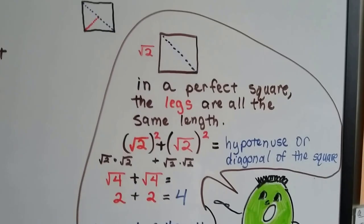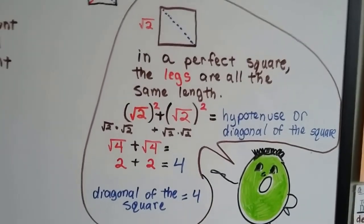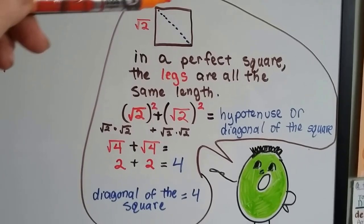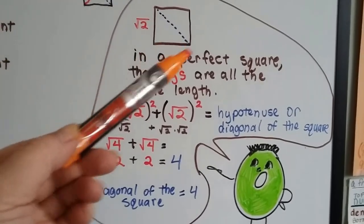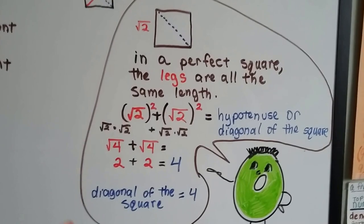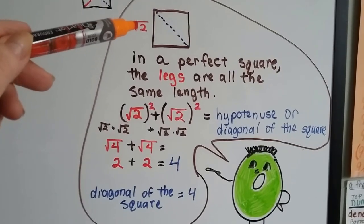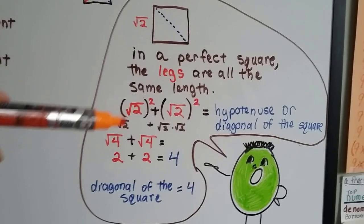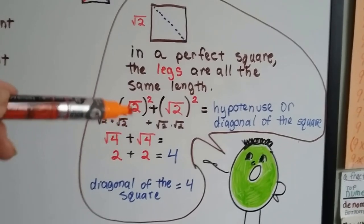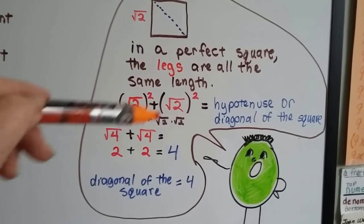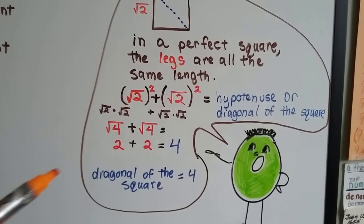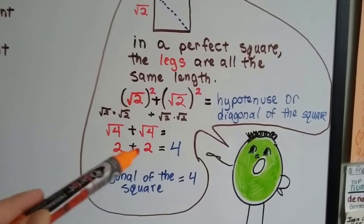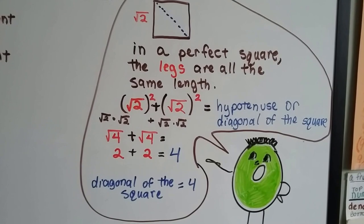We can even do that with a square. In a perfect square, the legs are all the same. If this is the square root of 2, then that's the square root of 2, and that's the square root of 2, and that's the square root of 2. And the square root of 2 squared means square root of 2 times square root of 2, which is square root of 4. And we would do the square root of 4 plus the square root of 4. Square root of 4 is a 2. 2 plus 2 is 4.